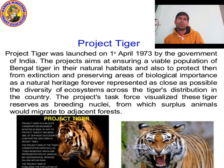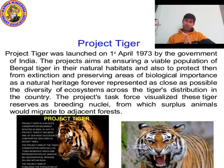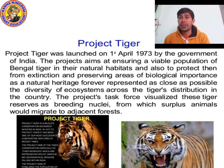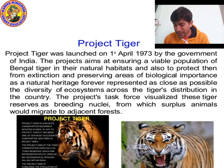Now our new topic is Project Tiger. Project Tiger was launched on 1st April 1973 by the government of India — I think by Indira Gandhi. It was launched to increase the population of Bengal tigers, because animals are very helpful to balance the ecosystem. The project aims at ensuring a viable population of Bengal tigers in their natural habitat.